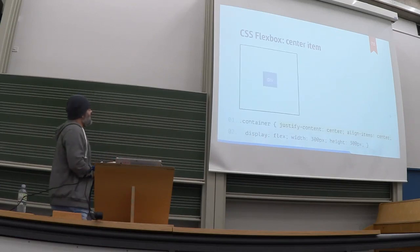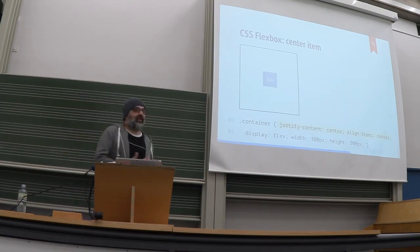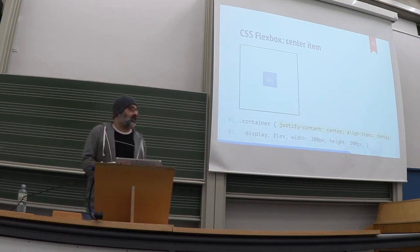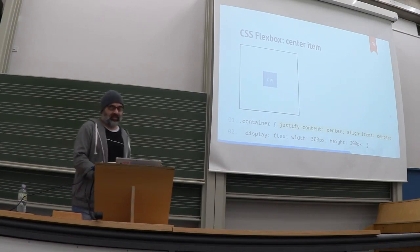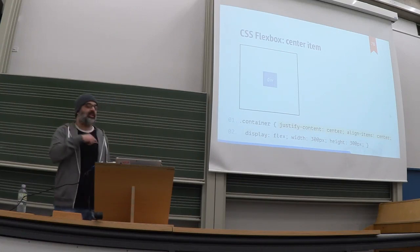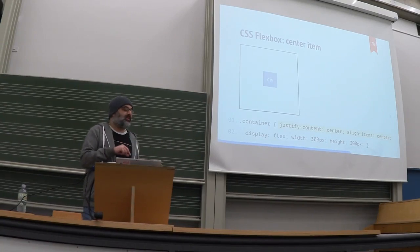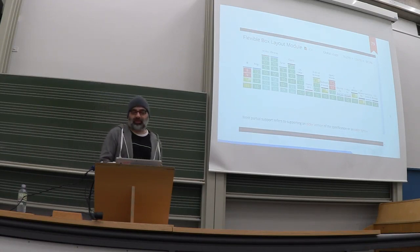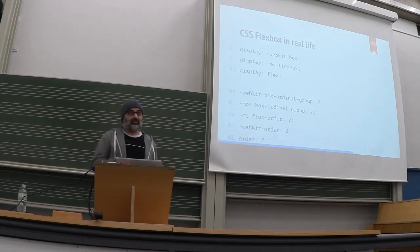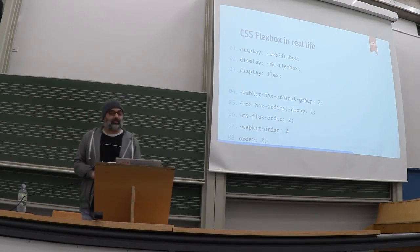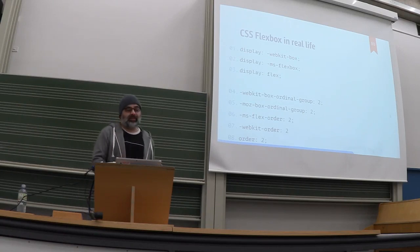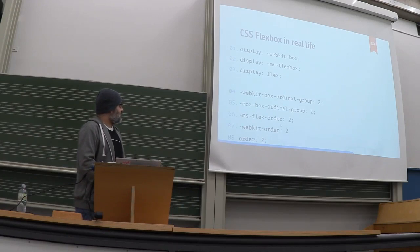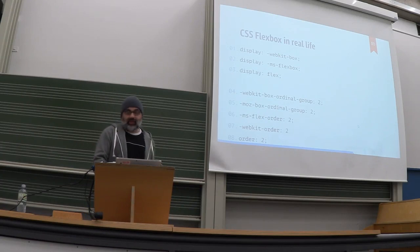The easiest thing you can do is center an item: define the container as a Flexbox, then justify-content and align-items center. In my opinion this is the easiest way to center an item — the container has a height, and the inner div doesn't need a specified width or height. Browsers are quite comfortable with the Flexbox module, but in real life you have to add some vendor prefixes, at least for Microsoft, and in some cases you need slightly different property names because Flexbox was changing. You can handle this easily using something like Autoprefixer.